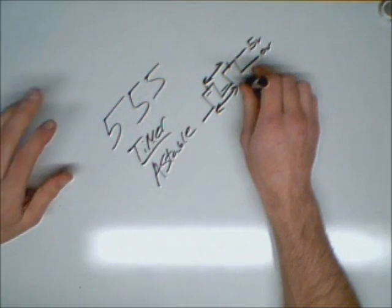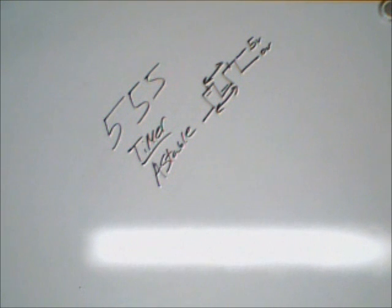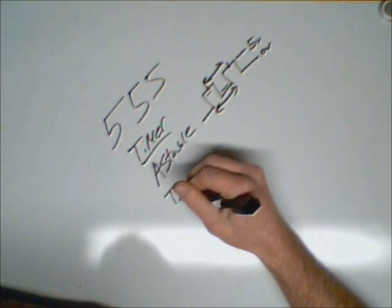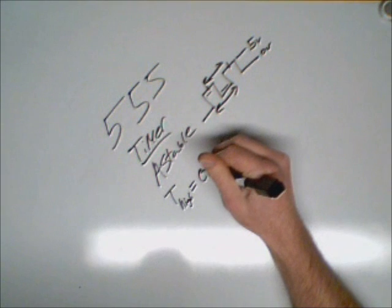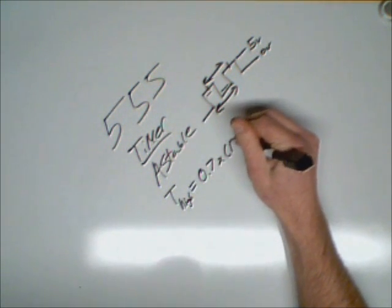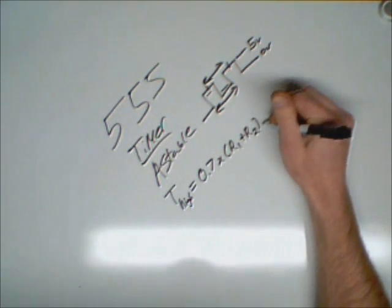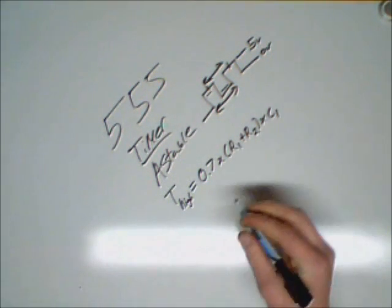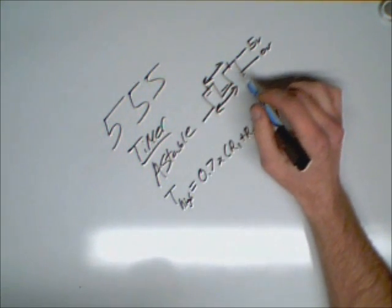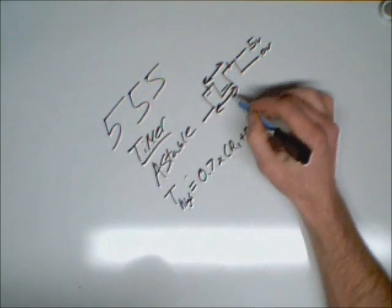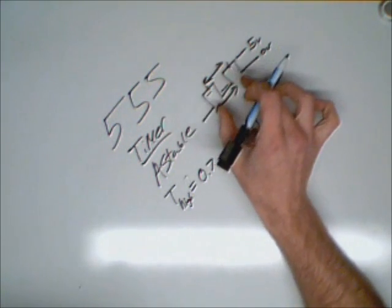The formula for figuring out the time that it's up here is time high equals 0.7 times R1 plus R2 times capacitor 1. That will tell you how long, how many seconds during that frequency this will be on, or cycle. So it will tell you that right there. Well, it will tell you this right here, of this right here.